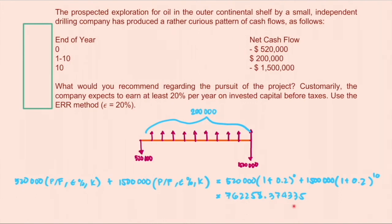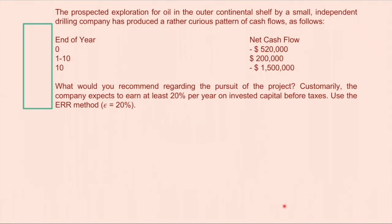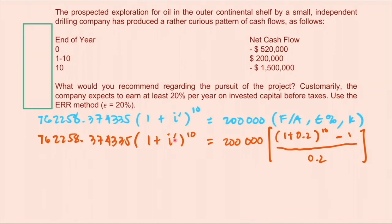This value now will be expressed in future at the end of the period using the ERR. So that value is the summation of the present worth of the costs times 1 plus i prime raised to 10. So this i prime now is the ERR.